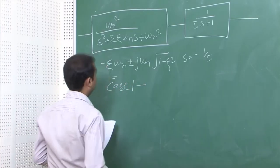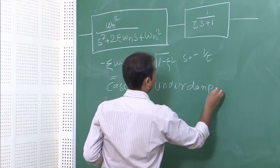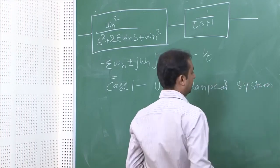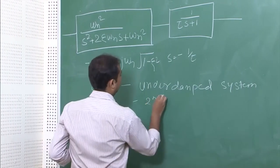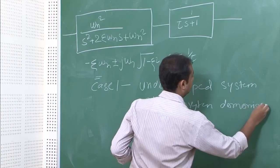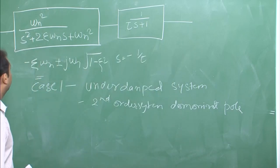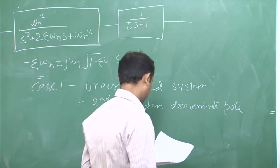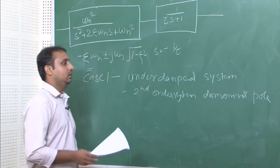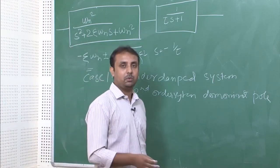Case 1: The second-order poles are the dominant poles. In this scenario, the cascaded system compared to the pure second-order system will have less percentage overshoot, less settling time, but greater rise time.